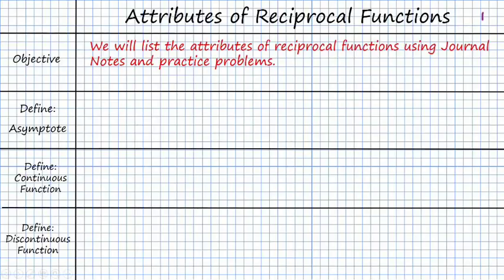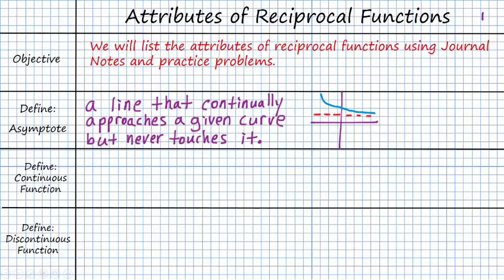First, we need to define a couple of things. So first I'd like to define an asymptote. An asymptote is a line that continually approaches a given curve but never touches it. We can have a couple of different types of asymptotes. This is going to be a horizontal asymptote. And we can also have a vertical asymptote, which is going to be a similar situation except that now I've got this vertical line here. And I'll have some curve which approaches it but never touches it.